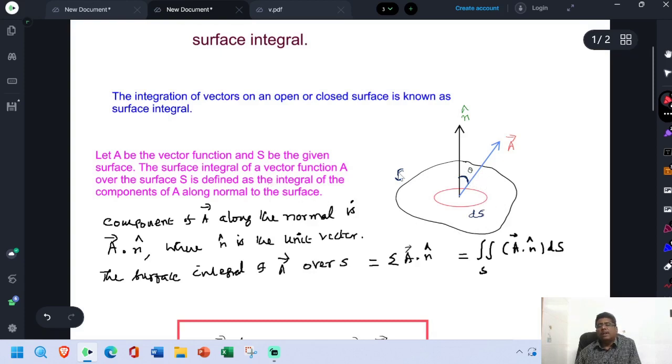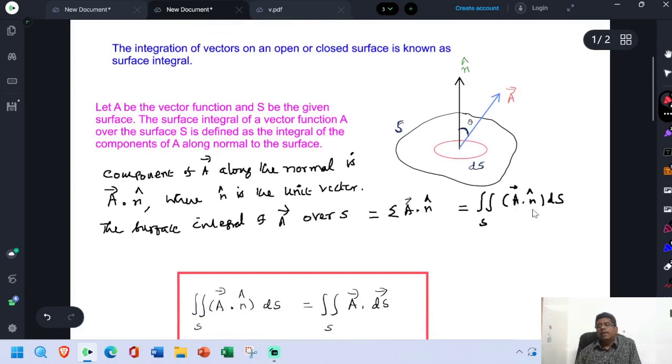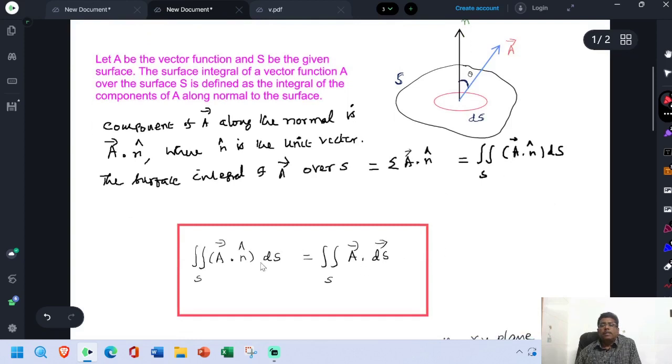The surface integral of the vector function A over the entire surface is obtained by means of taking summation of this quantity vector A dot n cap. This is equal to integral vector A dot n cap into Ds. Then the same is present in this form: vector A dot n cap into Ds equals vector A dot vector Ds.